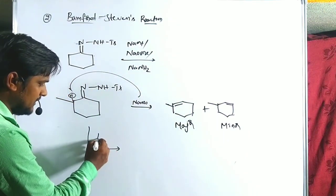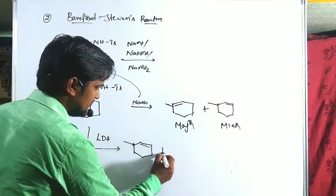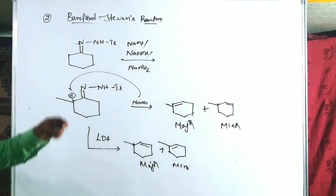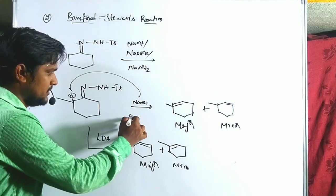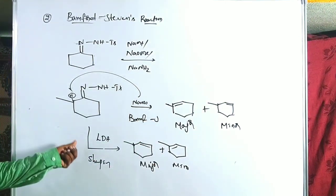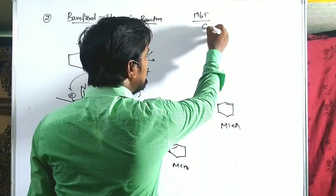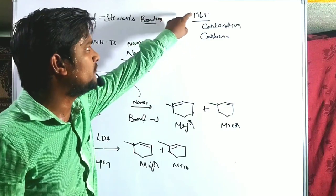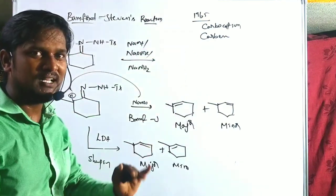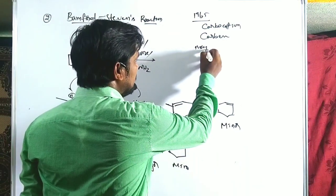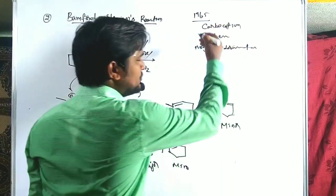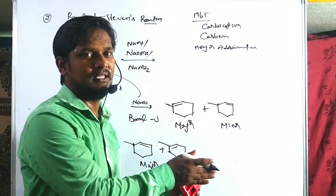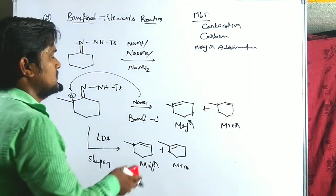In the Bamford-Stevens reaction using NaOH, the more substituted olefin is the major product, while the less substituted is the minor product. However, if instead of NaOH we use a strong base like LDA or butyllithium (Shapiro reaction conditions), the less substituted olefin becomes the major product. Shapiro reaction was introduced in 1965 and proceeds without carbocation or carbene intermediates. That is the major advantage of the Shapiro reaction — it provides a simpler, cleaner method to prepare olefins from tosyl hydrazones.